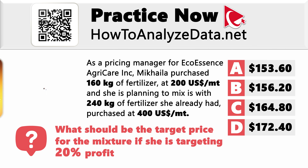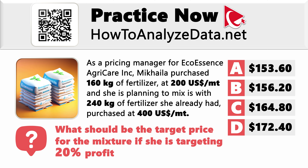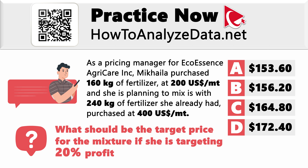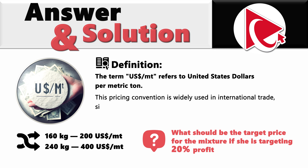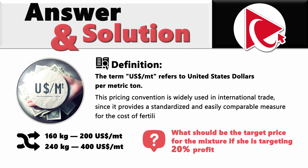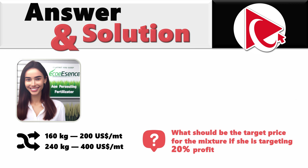Are you ready? Let's navigate the complexity of this question together and exchange solutions in the end. These types of problems can definitely be solved in multiple different ways — make sure to post your unique approach in comments so we can all learn. Let's start by looking at the term US dollar per MT, which refers to United States dollar per metric ton. This is the pricing convention widely used in international trade, since it provides a standardized and easily comparable measure for the cost of fertilizer on a weighted basis. Once we understand what we're dealing with, our first step is to determine the cost.